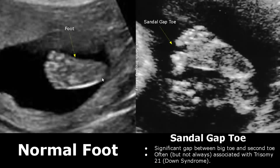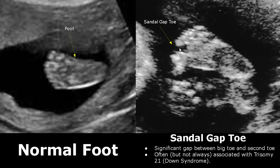A central gap toe consists of a prominent gap between the big toe and the second toe. You can see the difference in size of the gap compared to a normal foot. Usually it is an isolated finding, but sometimes it is associated with Down syndrome.